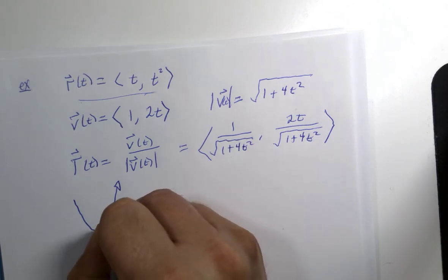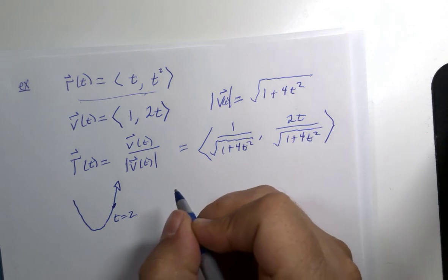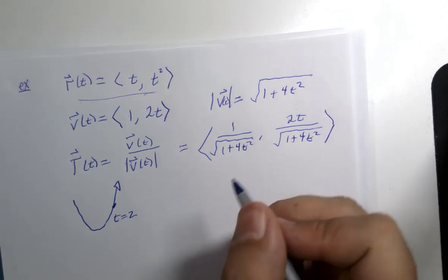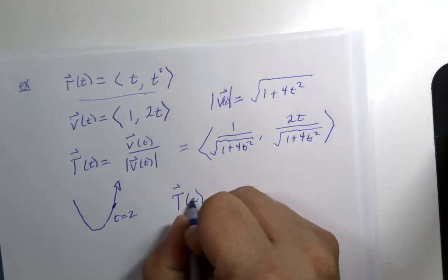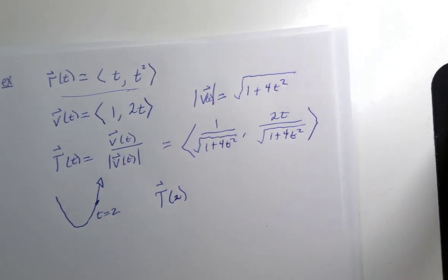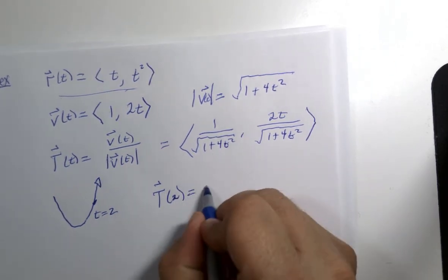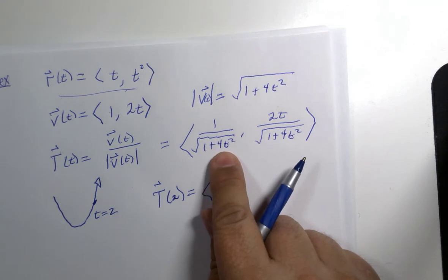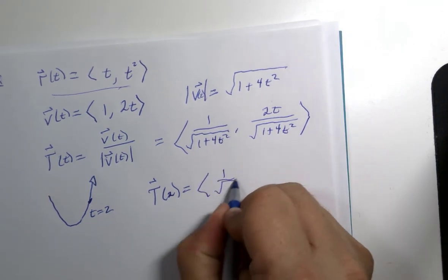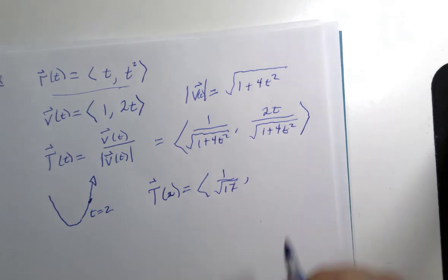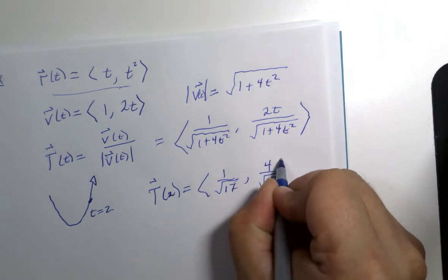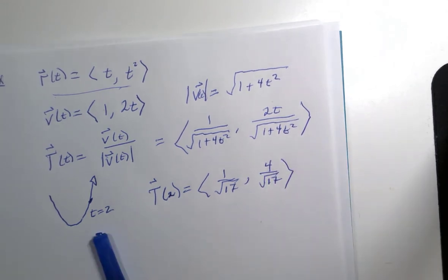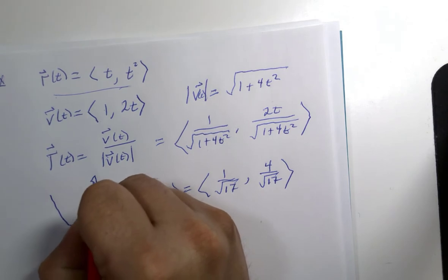If we wanted to calculate, for example, when t is 2, the actual unit tangent vector, the notation would be to calculate this at 2. It's a function. Substitute values into functions, and let's see what we would get. 2 squared is 4, 16, 1 over square root 17, comma, 2 times 2 is 4, 4 over square root 17. That would be the unit tangent vector at that point.